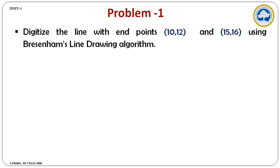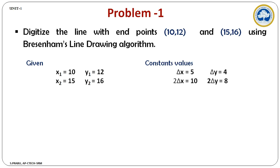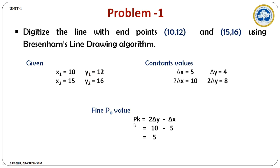The given problem is: digitize the line with end points (10,12) and (15,16) using Bresenham's line drawing algorithm. First, identify the values x1 and y1, x2 and y2. Find the constant values — delta x and delta y. Delta x is calculated by x2 minus x1, and delta y is calculated by y2 minus y1. Also find the 2*delta_x and 2*delta_y values. The next step is to find the initial decision parameter P0, using the formula 2*delta_y minus delta_x. Substituting the constant values, you get the value 5.